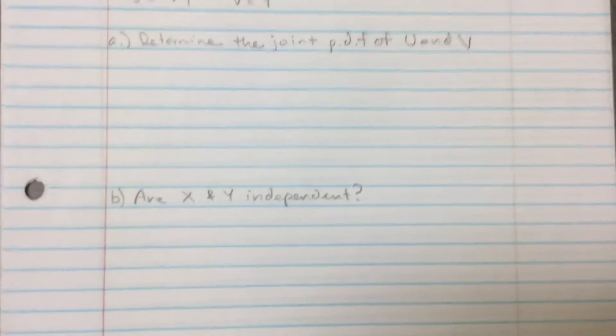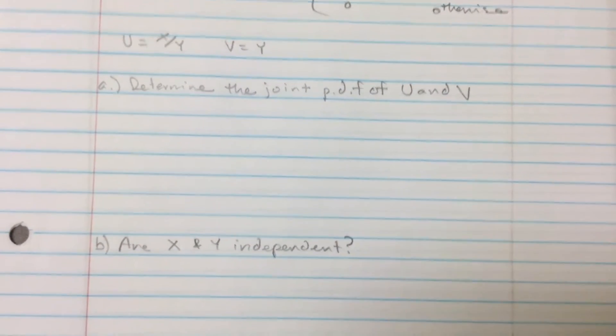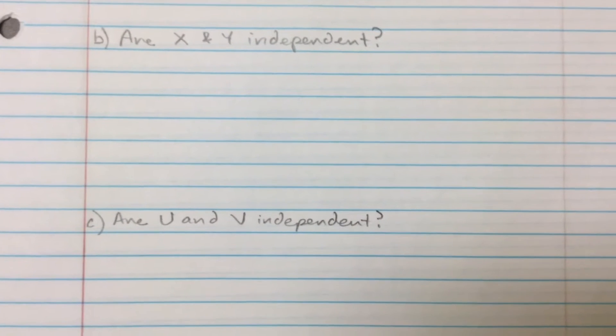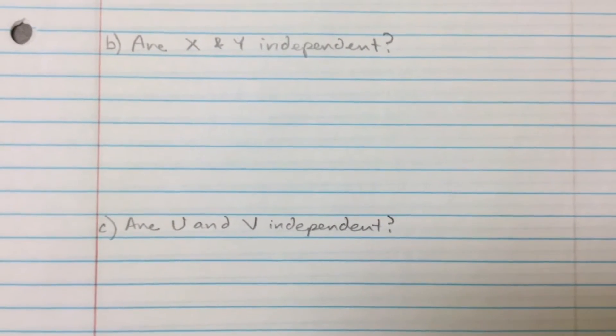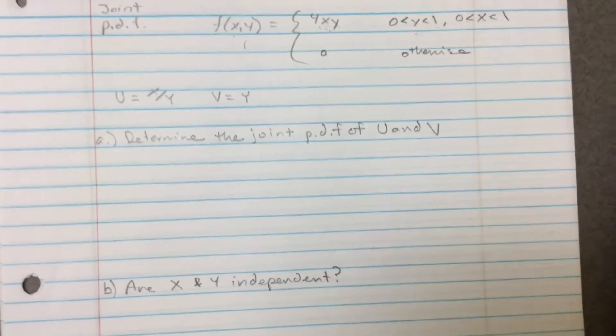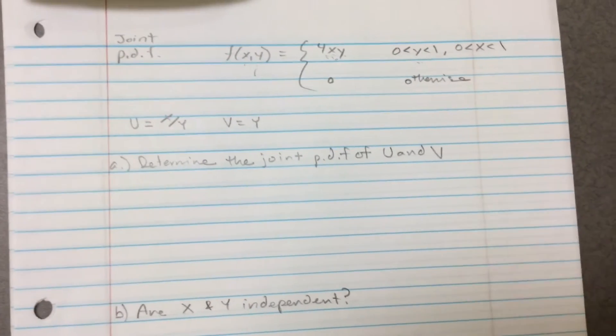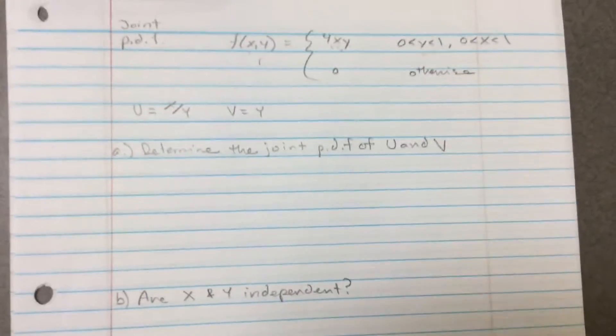And also there's three components to this problem: A, B, and C. So A is determine the joint PDF of U and V. B is are X and Y independent. And C is are U and V independent. So it's once again another diverse set of problems that will only make you better. Okay so let's begin.